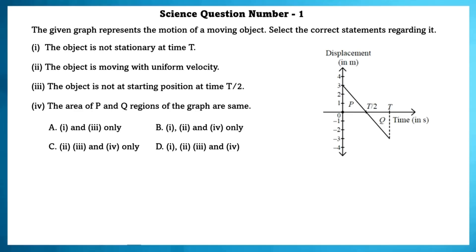The given graph represents the motion of a moving object. Select the correct statement regarding it. First one: the object is not stationary at time 3 — this is true. Second one: the object is moving with uniform velocity — yes, it is moving with uniform velocity.